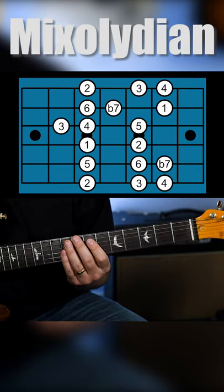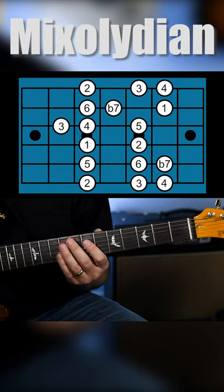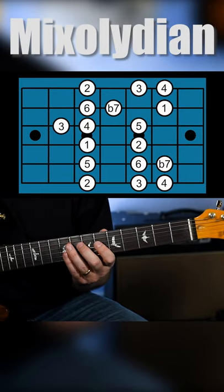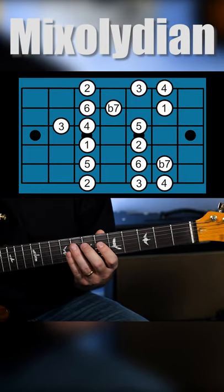Now we're going to play my favorite mode out of all the different modes. It is Mixolydian, and it is based off the fifth note of a major scale. It's basically a major scale with a flat 7.